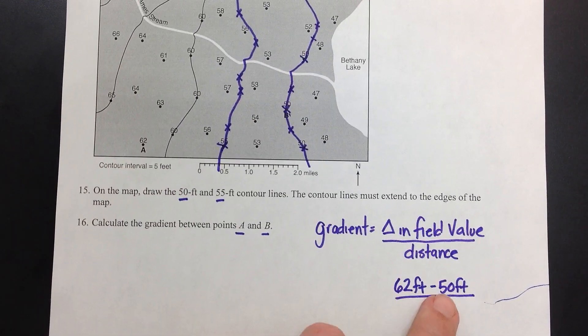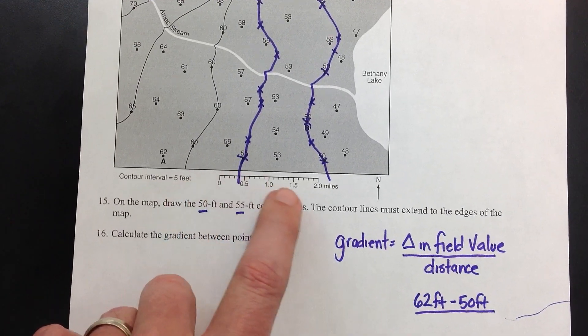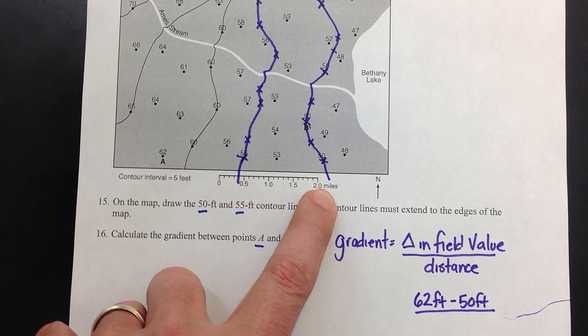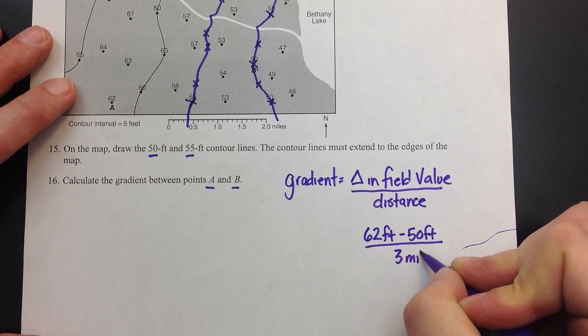So my interval here, my elevation is in feet, while my distance, my linear distance is in miles. So we just determine that to be 3 miles.